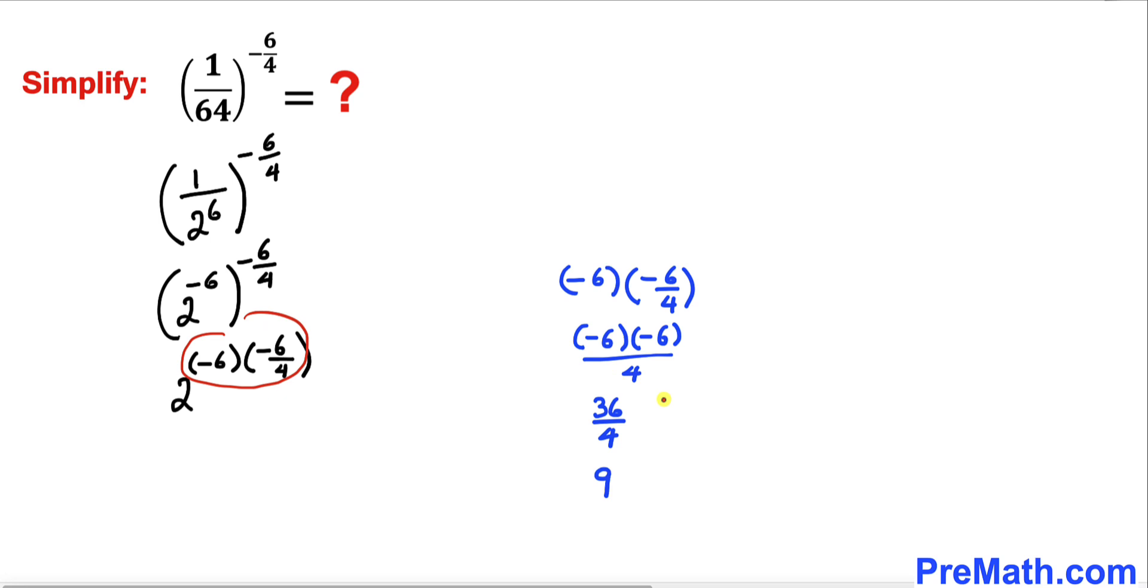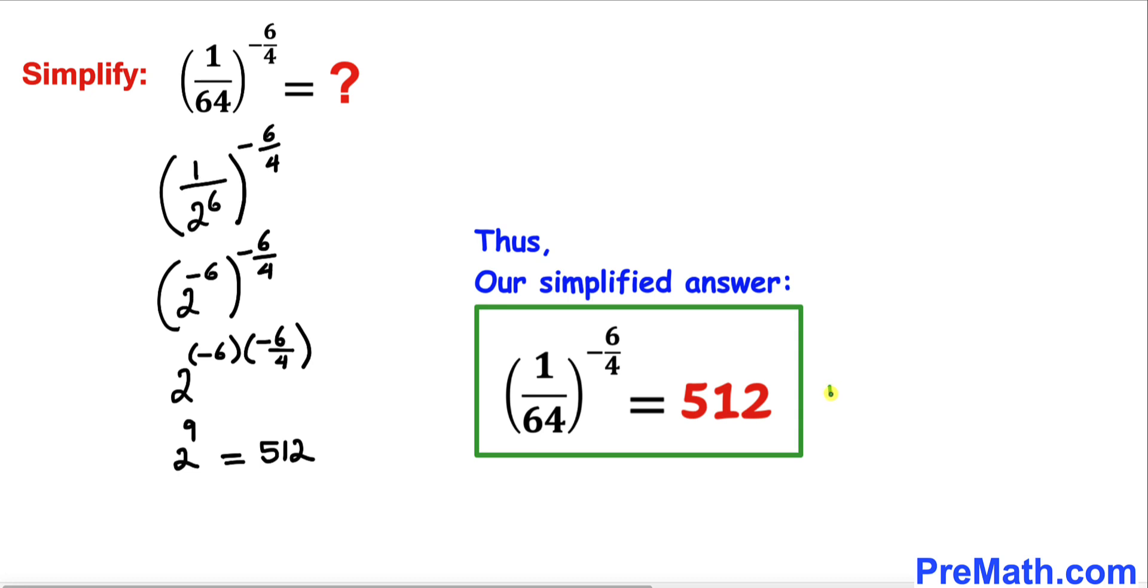And now if we multiply and simplify this thing, we can see that it turns out to be 9. So therefore this is same as writing 2 power 9. And 2 power 9 is same as 512, so thus our simplified answer turns out to be 512.